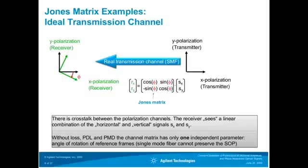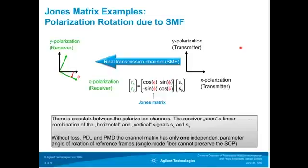In the case of polarization rotation — as described for signal propagation on single-mode fiber — the X and Y polarization at the receiver are rotated by an angle phi relative to the transmitter. The Jones matrix for this propagation is a simple rotation matrix with only one independent parameter. The received signal R_x contains a mixture of S_x and S_y from the transmitter, and the angle of rotation describes the mixture. Without loss, PDL, and PMD, the general matrix is still quite simple with only one independent parameter: the angle of rotation between transmitter and receiver frames.